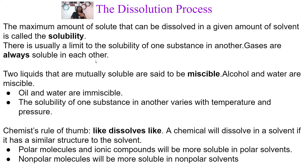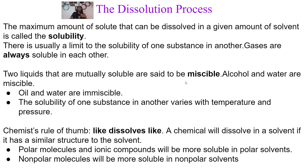Gases are always going to be soluble with each other. When we have two liquids that are mutually soluble with each other, we call these miscible — they're able to be dissolved with each other. Alcohol and water are miscible; they're going to dissolve in each other. Immiscible means those two liquids are not going to be soluble — examples like oil and water. These are immiscible; they're not going to be mutually soluble. The solubility of one substance in another varies depending on temperature and pressure. If you increase the temperature, that might increase the solubility; if you increase the pressure, that might decrease the solubility.